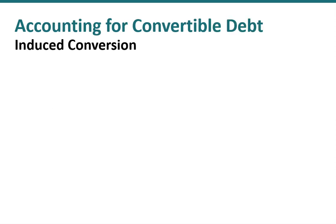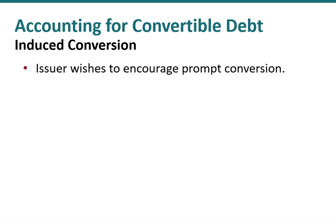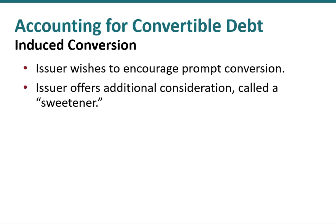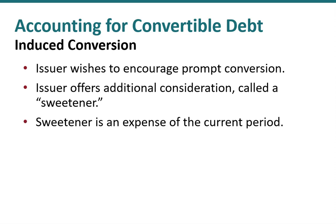The next issue is what we refer to as an induced conversion. This is when the issuer wants to encourage a more prompt conversion than the convertible debt holders might otherwise undertake. In other words, we want to quit making coupon payments to the debt holders and would like them to exchange their debt for shares of common stock. In order to do that, we often have to offer a sweetener — a little something extra — meaning we're going to pay them some additional cash to induce that conversion. Any cash or sweetener given to convertible debt holders is recorded as an expense in the current period.